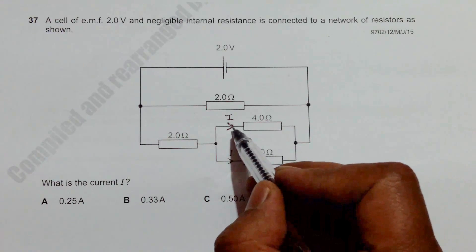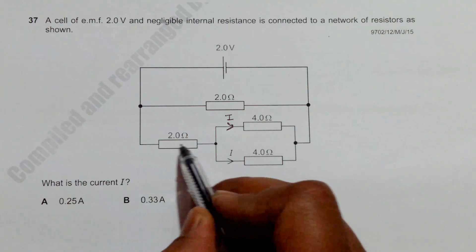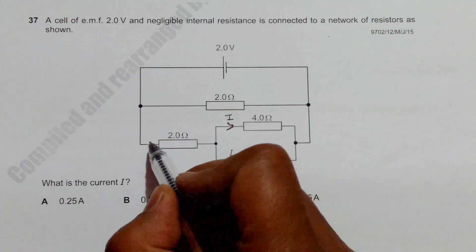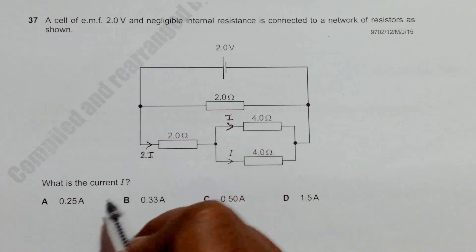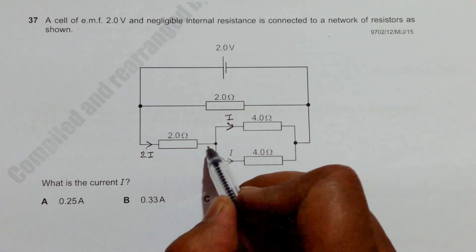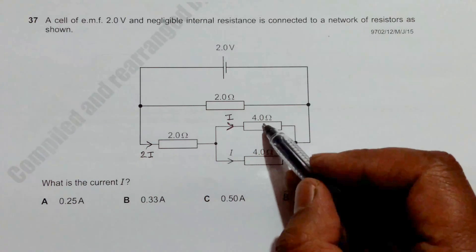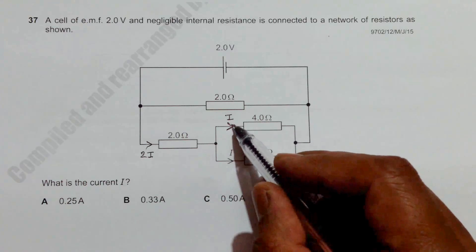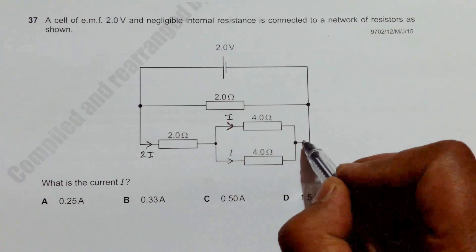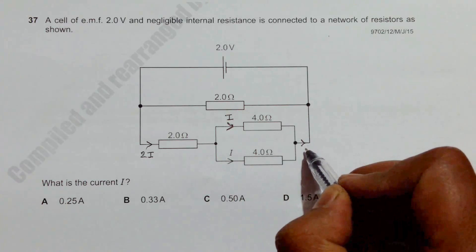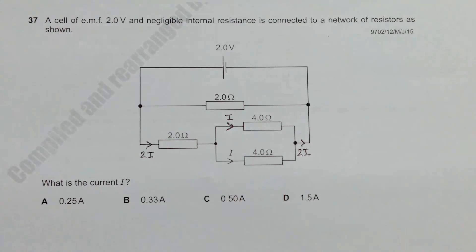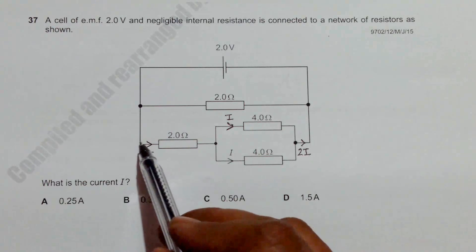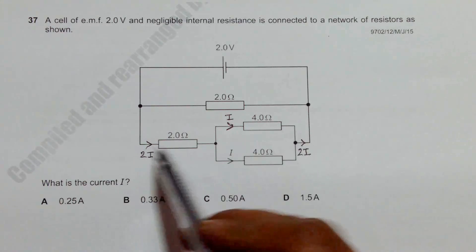Now these two currents come from this path, so that's why the current here should be equal to 2I. So this 2I branches into I and I in the equal resistors. Now these two I currents will recombine here and will again be equal to 2I here.